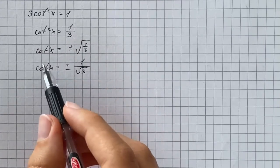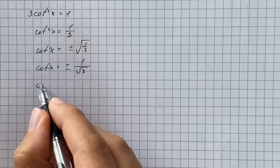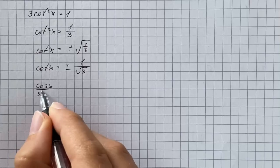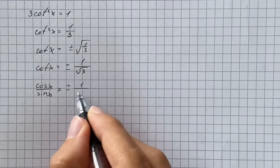So we know that tangent is sine over cosine, therefore cotangent is cosine over sine. That's going to be positive or negative 1 over square root of 3.